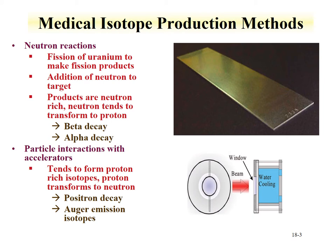Medical isotopes are a large area of application of nuclear material. There are two routes for producing medical isotopes. Neutron reactions, where uranium is fissioned — one can utilize the fission products, or the neutrons from fission can be reacted with a target to obtain the product of interest. From neutron reactions, products tend to be neutron-rich and decay through either beta decay or alpha decay.